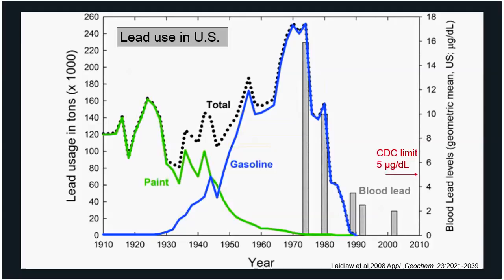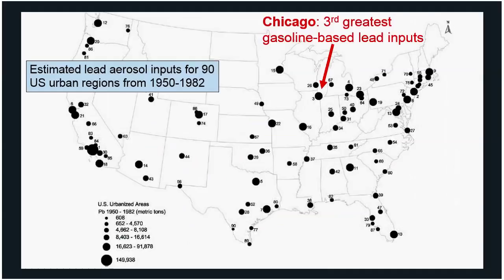There's been quite a legacy of heavy metal deposition in this country. Shown here is the legacy of lead from gasoline-based sources in the U.S. from 1950 to 1982. The bigger the black circle, the more tons of lead were deposited in that metro region. Not surprisingly, the amount of lead put out there tracks well with population due to more people and more cars. Los Angeles is first, followed by New York second, and third is Chicago.